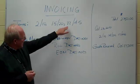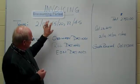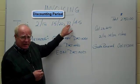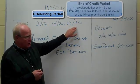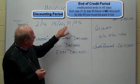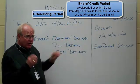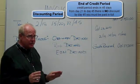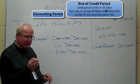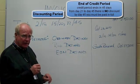The last part covers the end of the credit period. Days 1 through 20 were the discounting period. The N/45 says the credit period ends in 45 days, so from day 21 to day 45 there will be no discount — but by day 45, the invoice must be paid off in full.